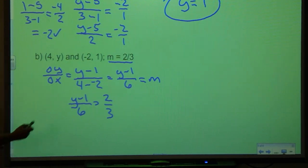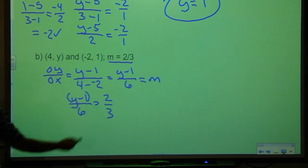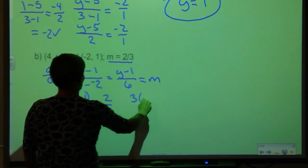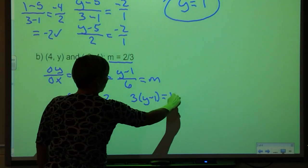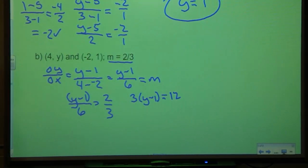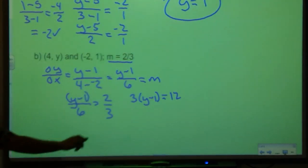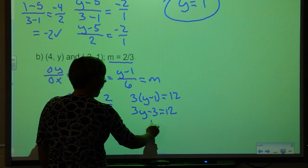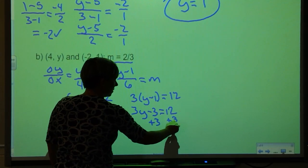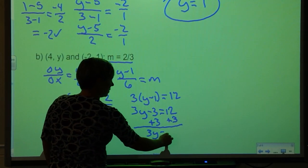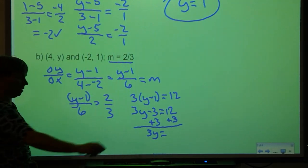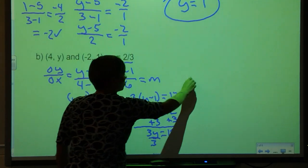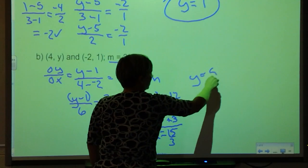And remember, when I'm cross multiplying, this numerator does need to be in parentheses. So I will get 3 times (y - 1) is equal to 12. Then solve my equation. I get 3y minus 3 is equal to 12. Add 3 to both sides. 3y is equal to 15. Divide by 3. So I know y is equal to 5.